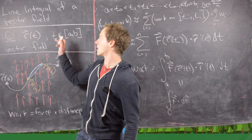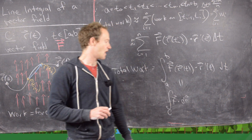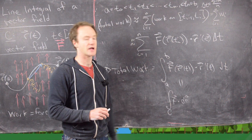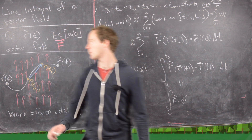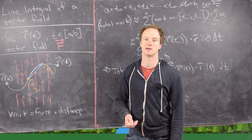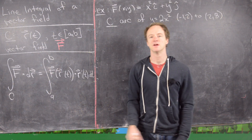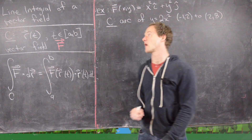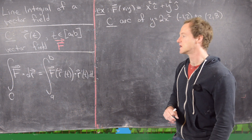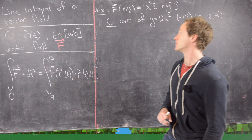The notation is the line integral over C of F dot dR, where R is the parametrization of the curve. We've turned it into just an integral over a one-variable function, because taking the dot product of two vectors gives a scalar function. Now let's do some examples.